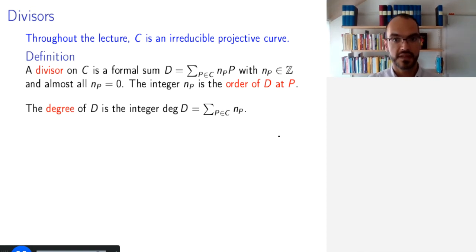And if we sum all these orders, then we get the degree of the divisor. So for example, in our previous example, it would be 3 minus 6, which is minus 3, the degree of the divisor.